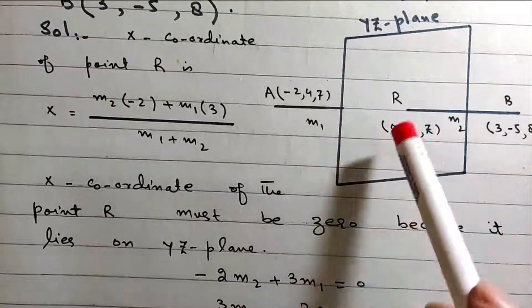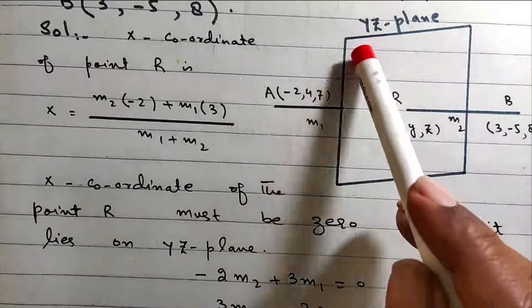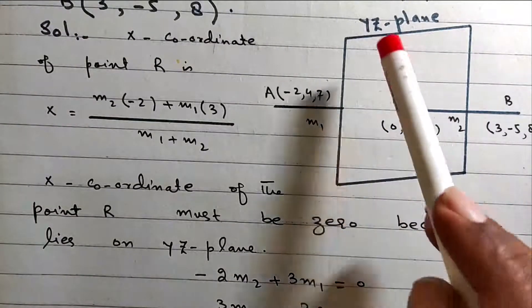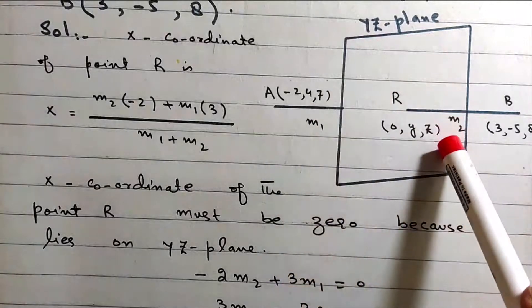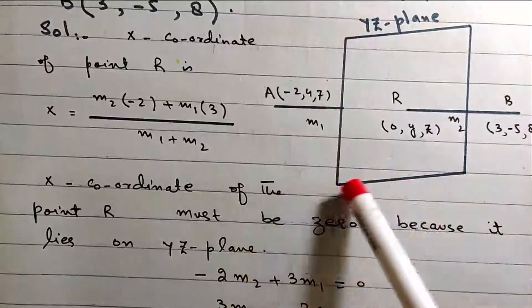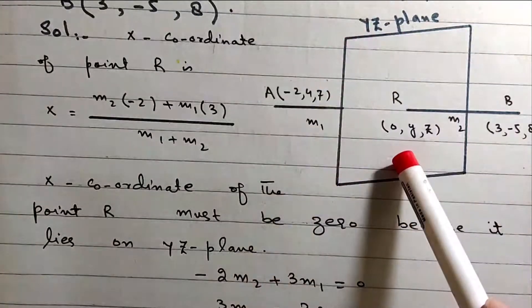Note: for the YZ-plane, x equals 0; for the XZ-plane, y equals 0; for the XY-plane, z equals 0. For any given plane, set the corresponding coordinate to zero.